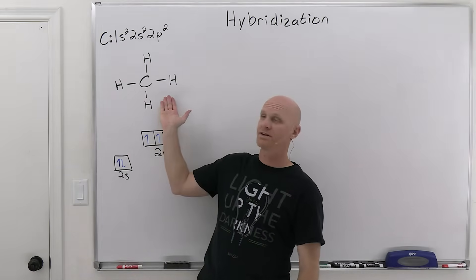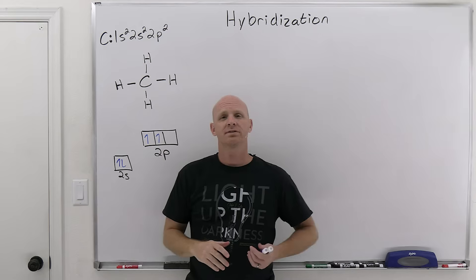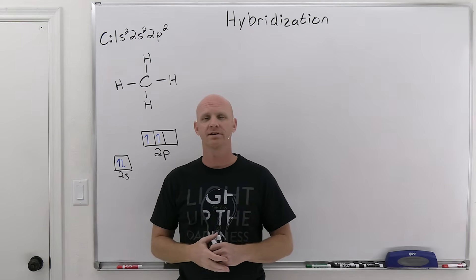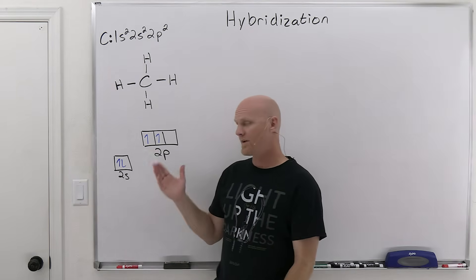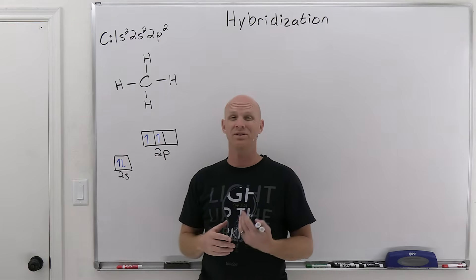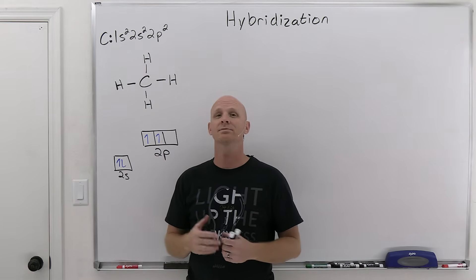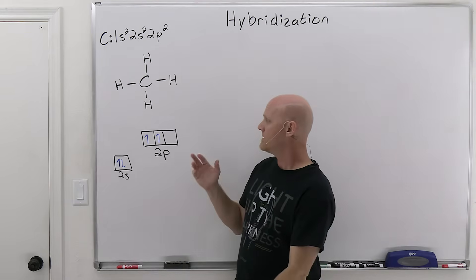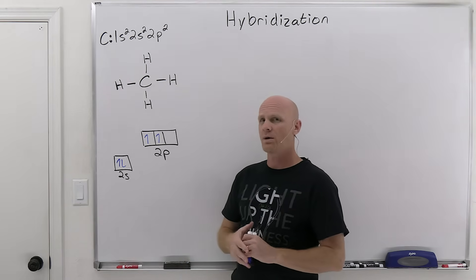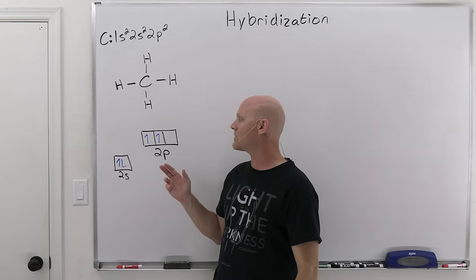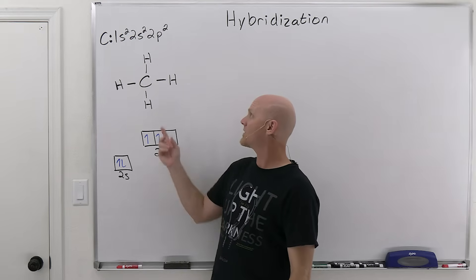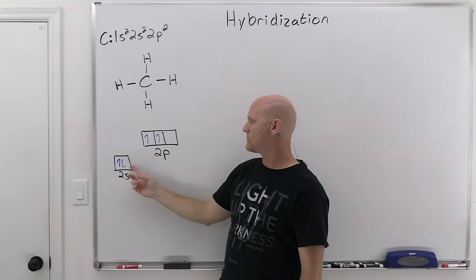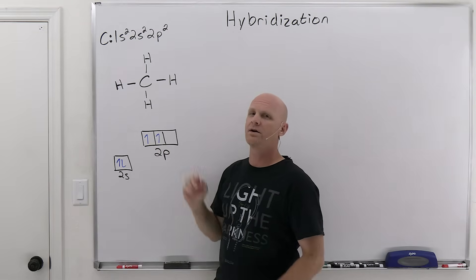We're going to take a look at methane, CH4, and use it to describe why this need for hybrid orbitals comes about. The atomic orbitals carbon has available are just not sufficient to form a molecule of CH4. First, carbon is 1s2 2s2 2p2, so it has four valence electrons, but only two of them are unpaired. Valence bond theory says an atom is going to use its unpaired electrons to make bonds — which would seem to imply carbon only makes two bonds, but we know carbon routinely makes four bonds.